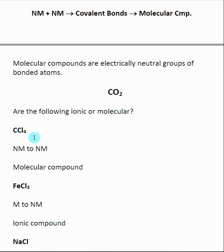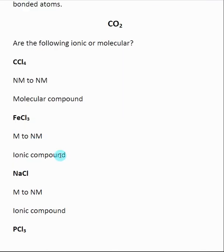For example, CCl4 — we have carbon and chlorine bonded together. Looking at the periodic table, carbon is in the upper right-hand corner and chlorine is all the way to the right, so these are both nonmetals. A nonmetal bonded to a nonmetal is a molecular compound with covalent bonds.